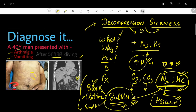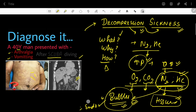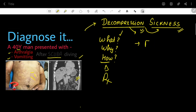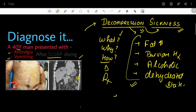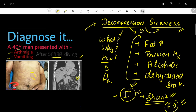Risk factors for decompression sickness include higher fat content in the patient, previous history of the condition, chronic alcoholism, and dehydration. For Type 2 decompression sickness with CNS involvement, a cardiac shunt such as a patent foramen ovale is required, through which bubbles from the venous circulation can pass into the arterial circulation and reach the brain, causing neurological symptoms.